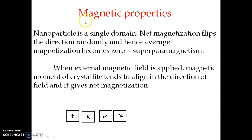The next property is the magnetic property of nanoparticles. When we consider nanoparticles, their dimensions are less than 100 nanometers. In one nanoparticle, all the atoms or atomic dipoles present are aligned in only one direction. So we can say that one particle is one domain — it is a single domain — and therefore it has net magnetization.